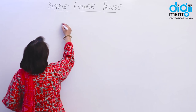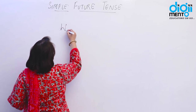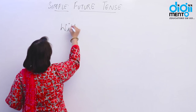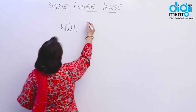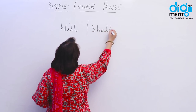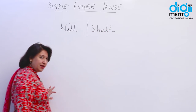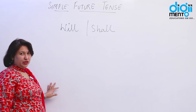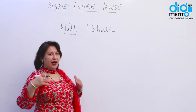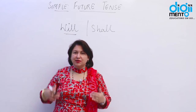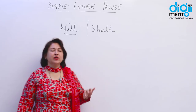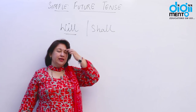Mainly in the future tense, the helping verbs that we use are 'will' and 'shall.' We can use both, but these days 'will' is more commonly used. I will not say that 'shall' is incorrect.